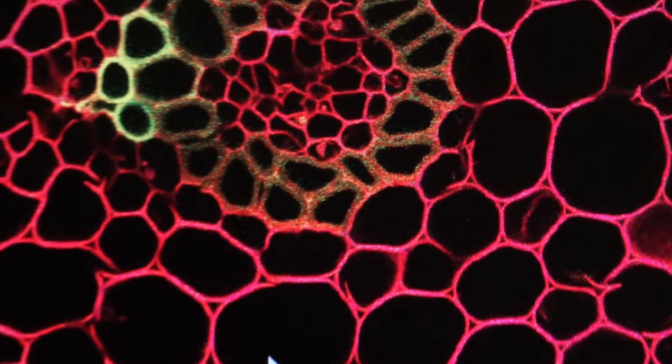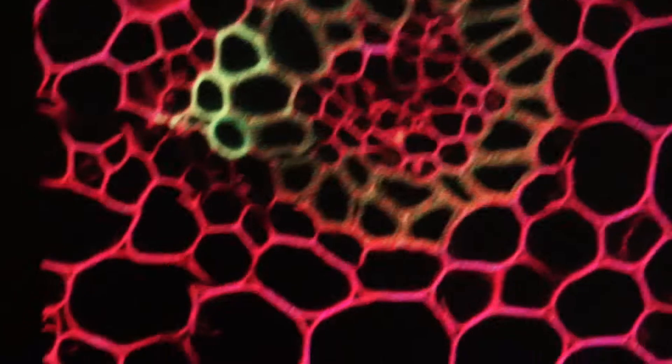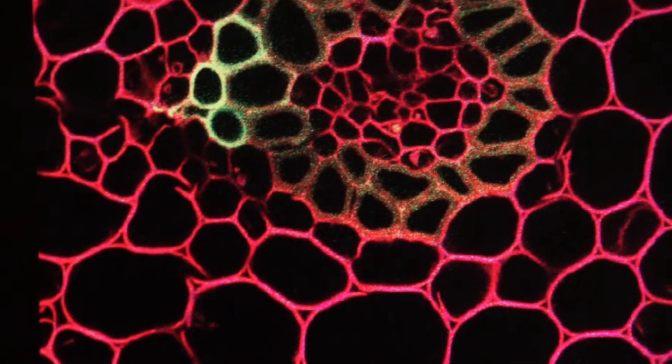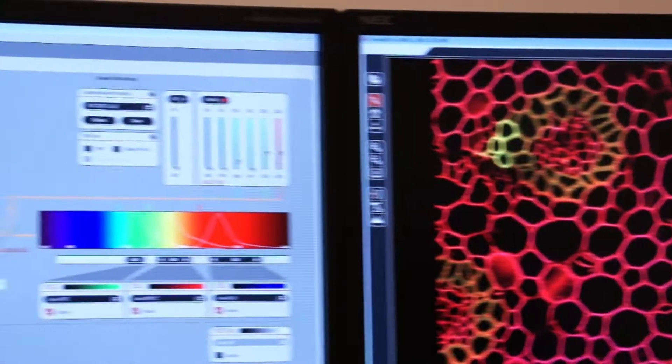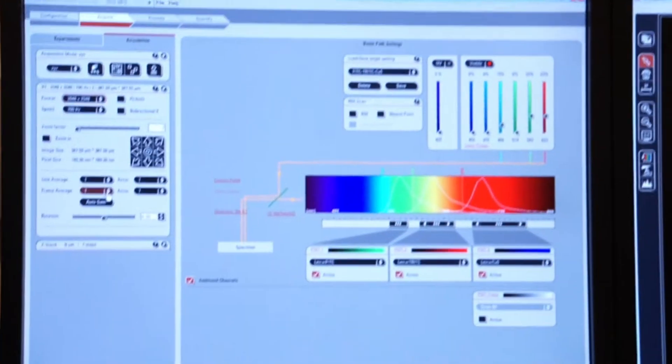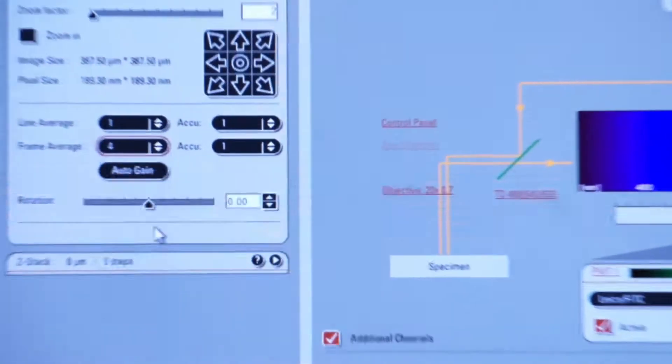So speed is helpful when you do averaging, but there's always a trade off on whatever you select in terms of making your better image. Let's go back and turn off line averaging. We'll make that one. And let's do frame averaging again. We'll do four.